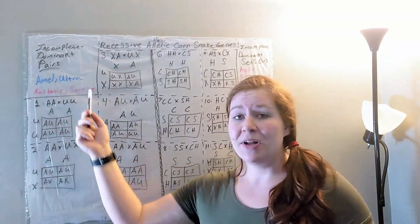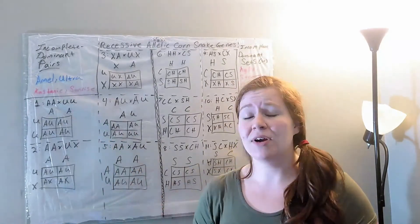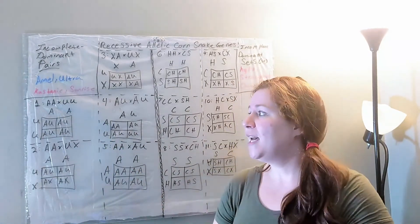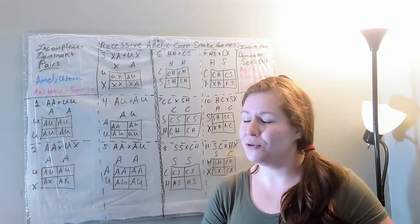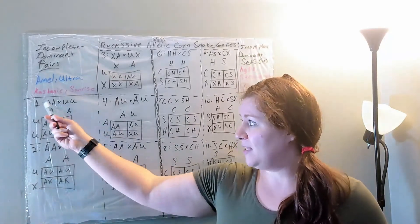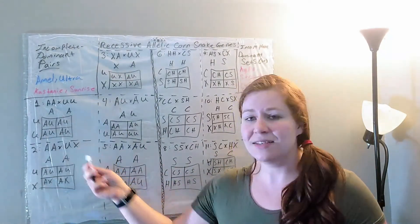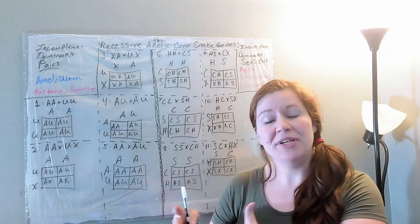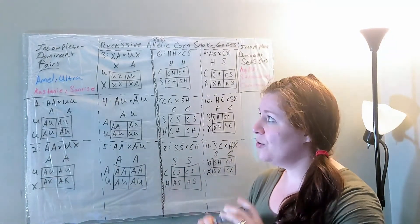I am just going to use Amel and Ultra instead of Castagna and Sunrise, because Amel and Ultra is more common and it's actually one of my favorite genes to work with. So A is Amel, U is Ultra, and as usual, X is the placeholder for any place that doesn't have that gene on that side.